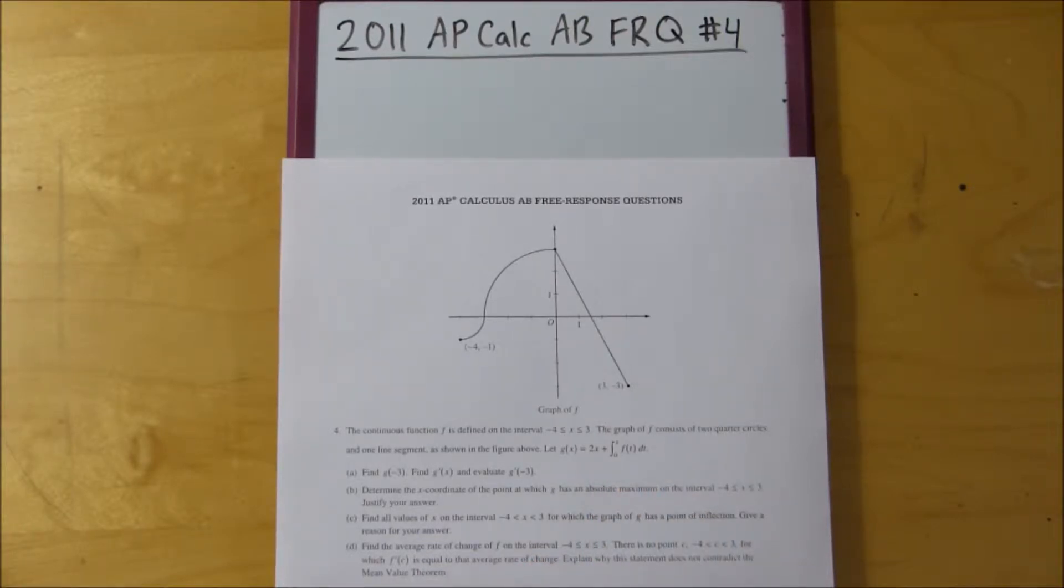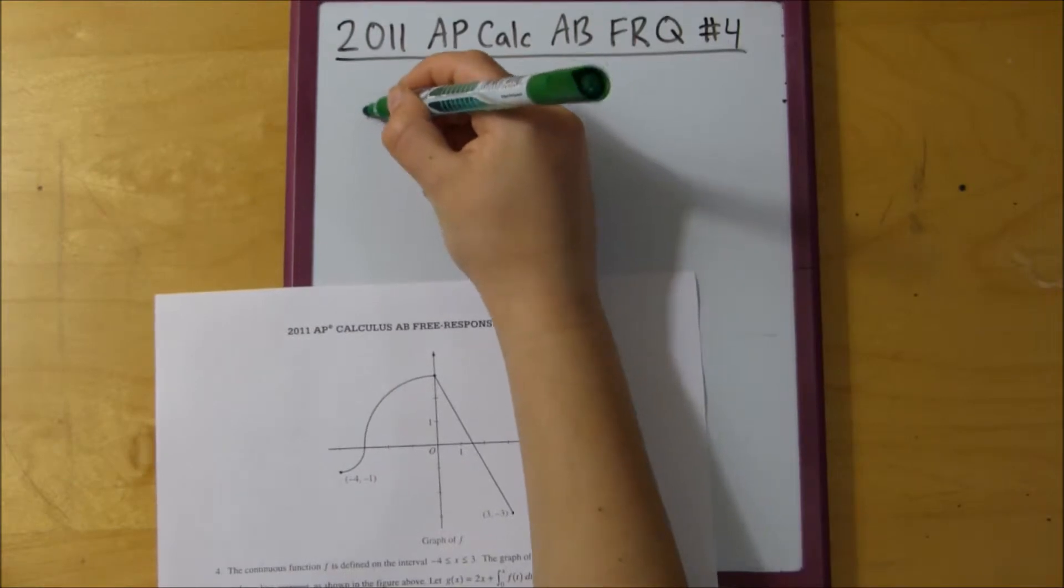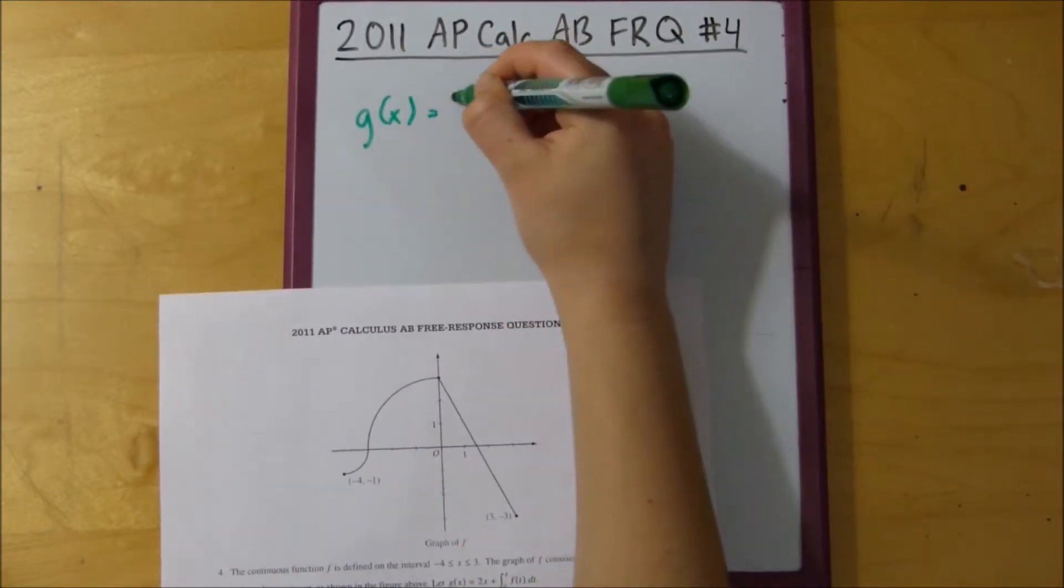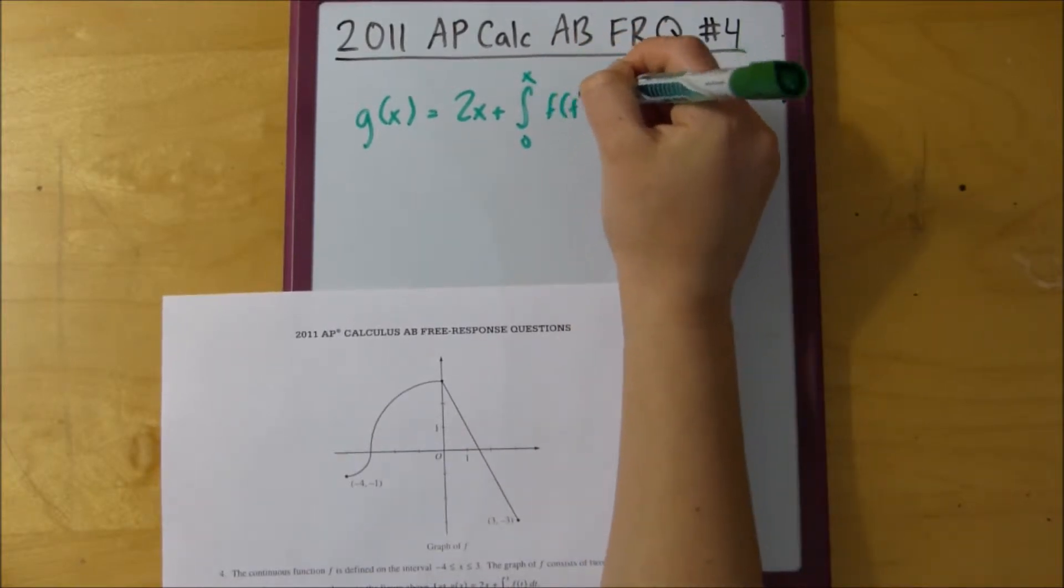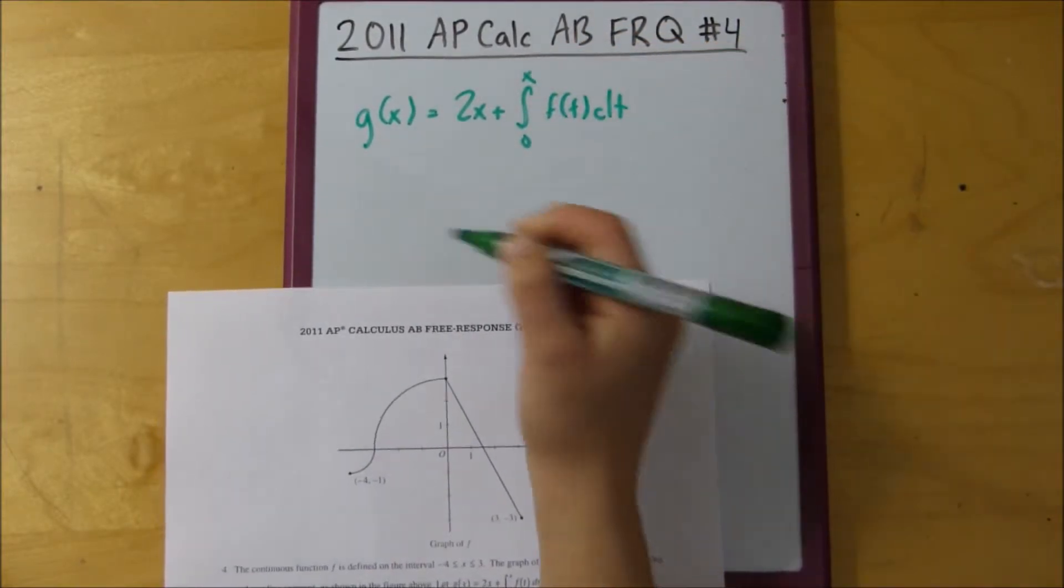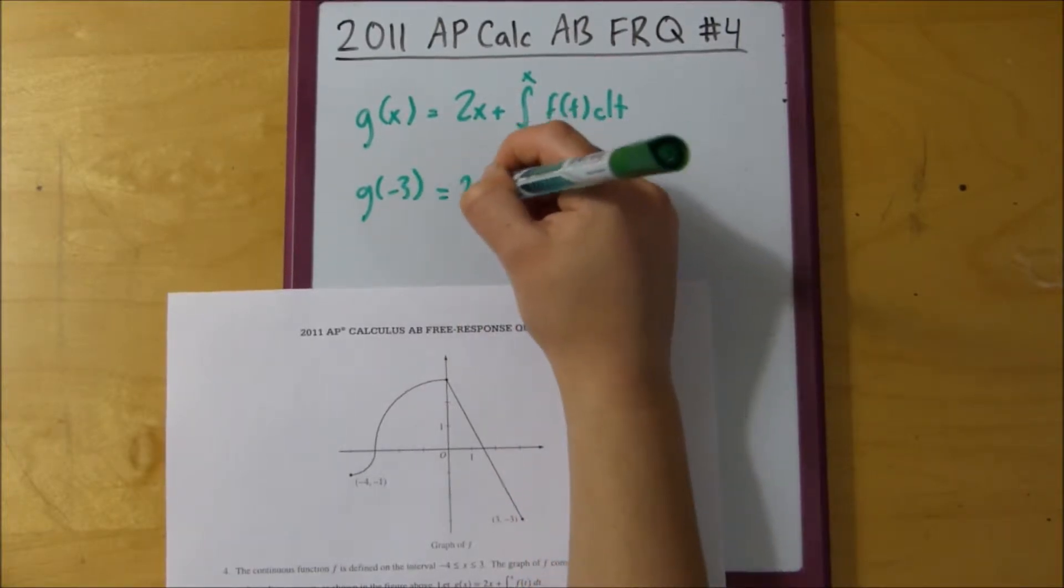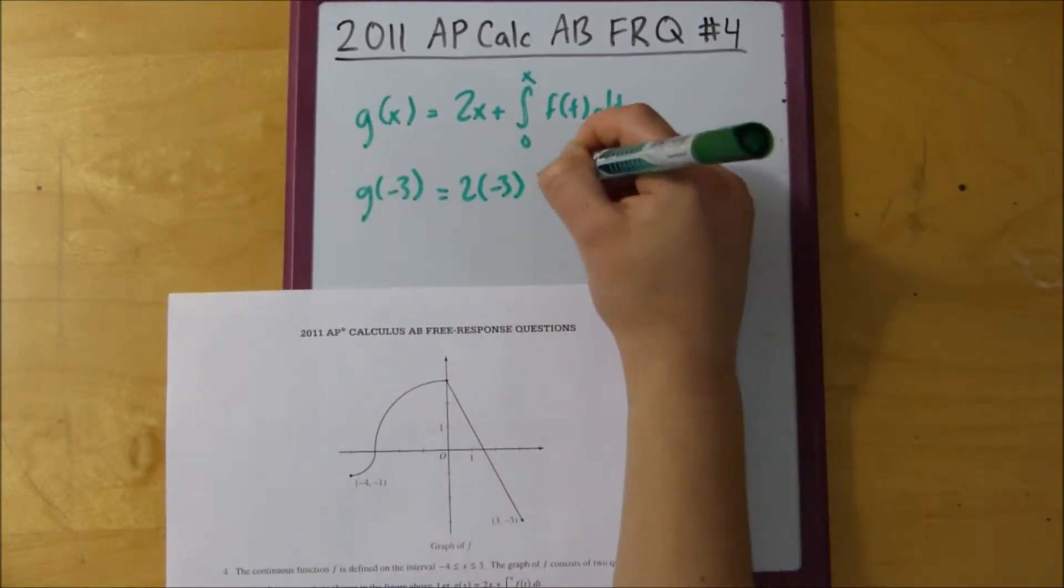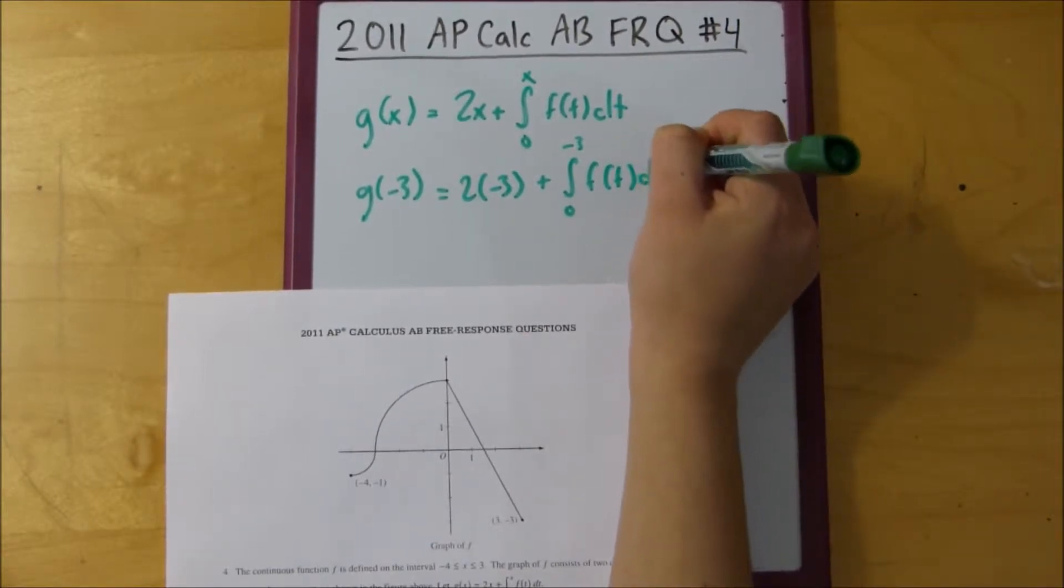So, we've got this graph, and we're told that this function g of x equals 2x plus the integral from 0 to x of f of t dt. And our first problem asks us to find g of negative 3. So what that's really asking, if g of x is 2x plus 0 to x f of x, g of negative 3 is the same thing as 2 times negative 3 and an integral from 0 to negative 3 of f of t dt.